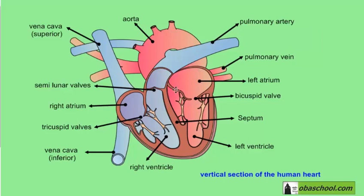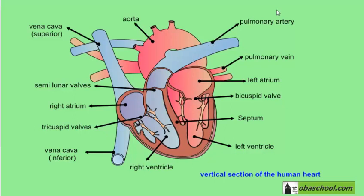In the lungs, the blood will undergo gas exchange. The carbon dioxide will diffuse from the blood to the lungs, and oxygen will diffuse from the lungs to the blood. Now this blood is oxygenated again, and it will return to the heart through the pulmonary vein — and the cycle starts again.